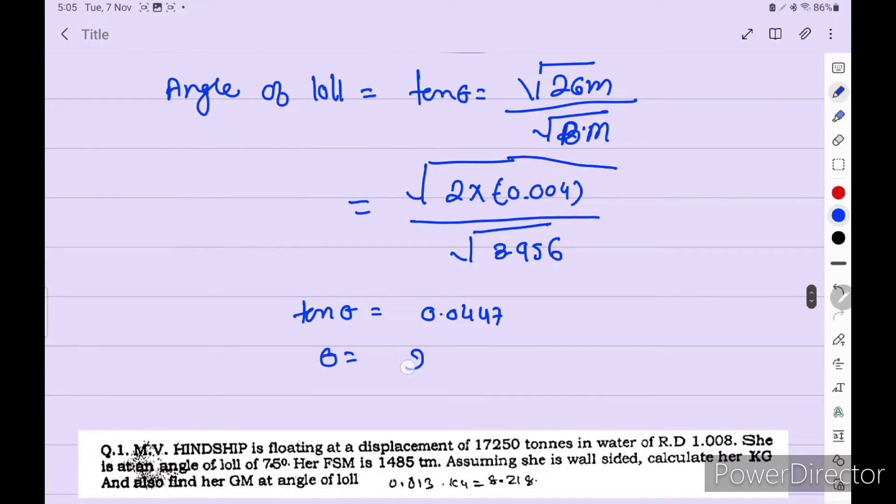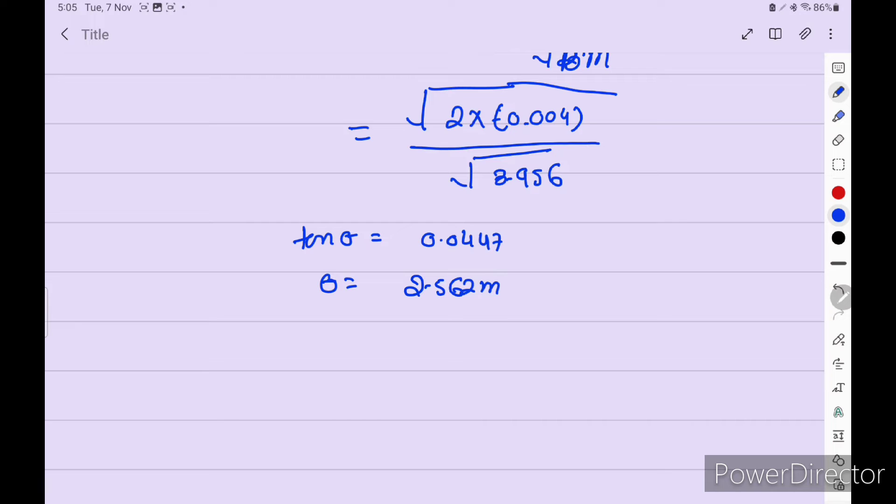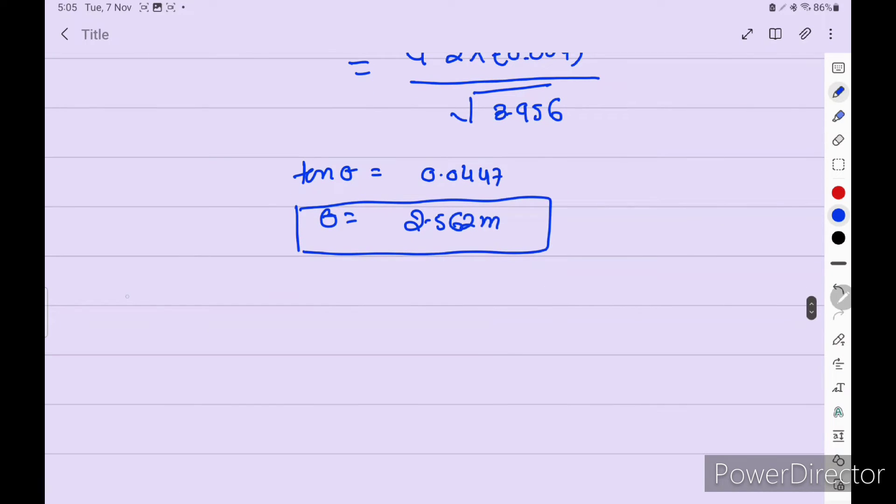So tan inverse is equal to 2.562 degrees. So tan theta we get 2.562. Now we have to find GM at angle of loll.